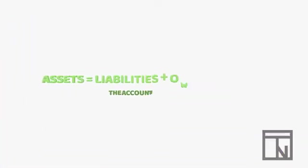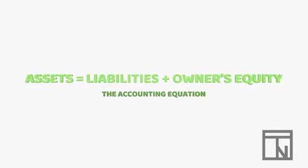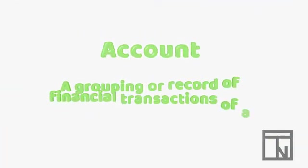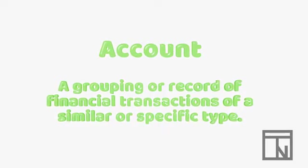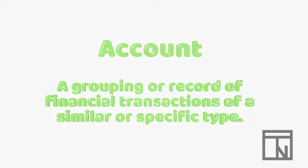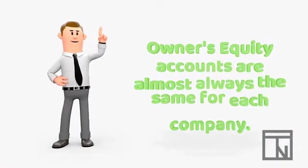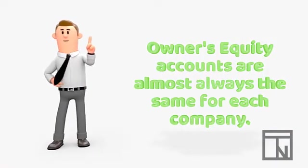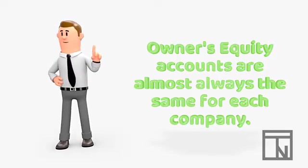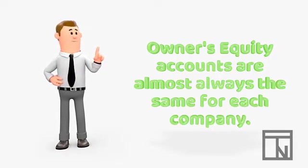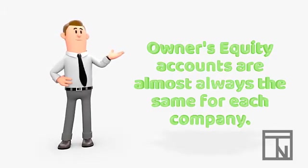In a previous video, we learned that the fundamental accounting equation was assets equals liabilities plus owner's equity. We also learned that within these three categories are many different groupings called accounts, which help label and organize the many transactions recorded in accounting. While businesses often create their own names for these accounts, the accounts used in owner's equity are almost always the same and there are very specific uses for each one, so I wanted to take a minute to introduce you to these accounts.